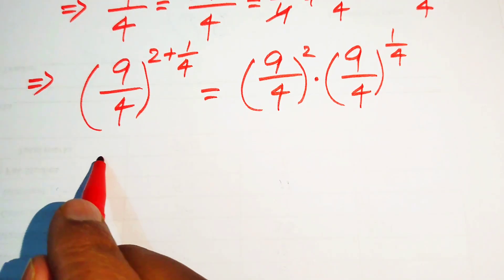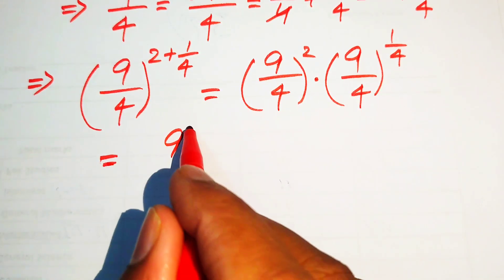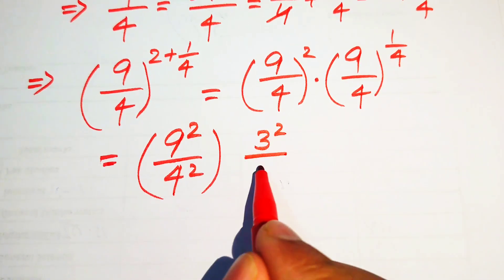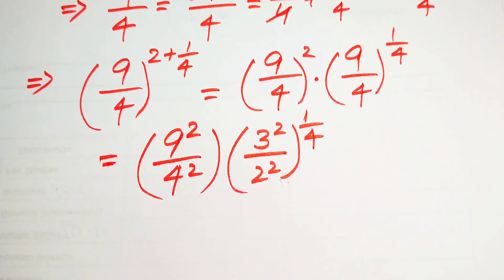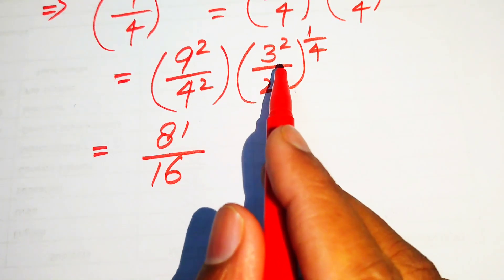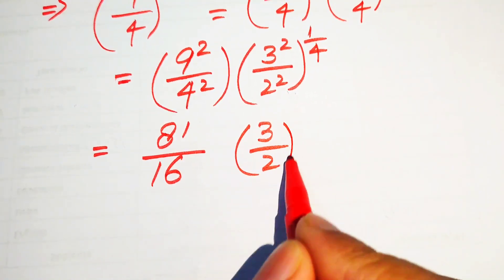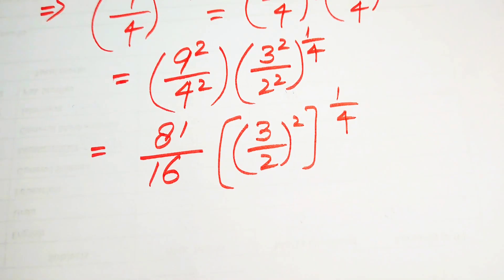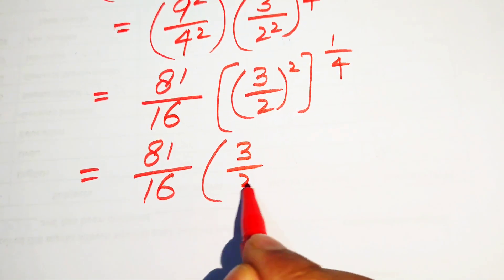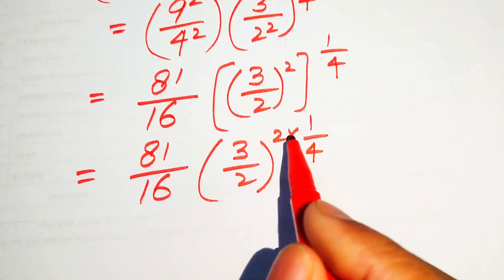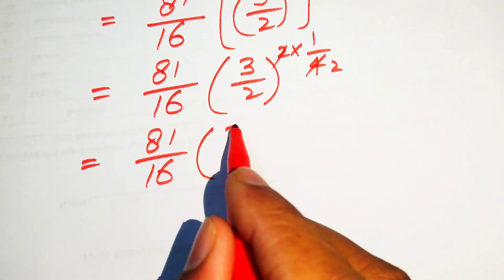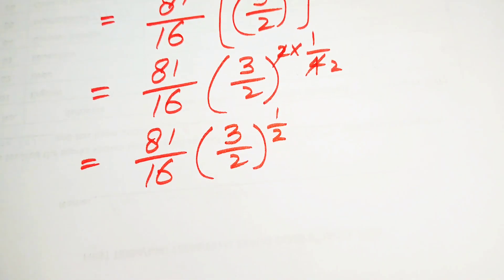We separate the exponent on both terms: 9²/4² · (3²/2²)^(1/4). Then we multiply the exponents: 81/16 · (3/2)^(2 × 1/4). Since 2 × 1/4 = 1/2, this gives 81/16 · (3/2)^(1/2).